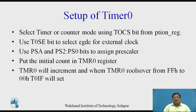To implement Timer 0, follow these steps: first, select timer or counter mode using the T0CS bit from the option register. Then use the T0SE bit to select the edge for the external clock. Use the PSA bit to assign the pre-scaler to Timer 0, and PS2 to PS0 bits to decide the pre-scaler rate. Put the initial count in the Timer 0 register. Timer 0 will increment, and when it rolls over from FF to 00, the Timer 0 interrupt flag will be set.